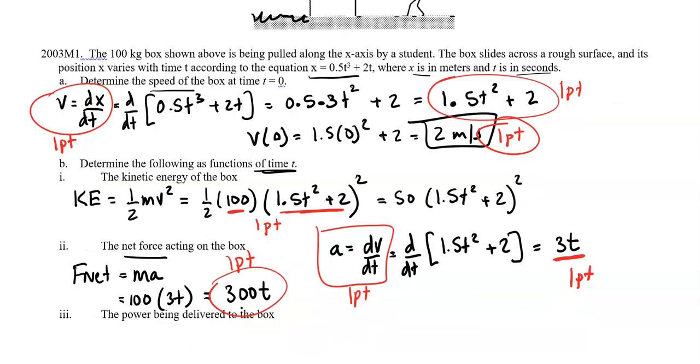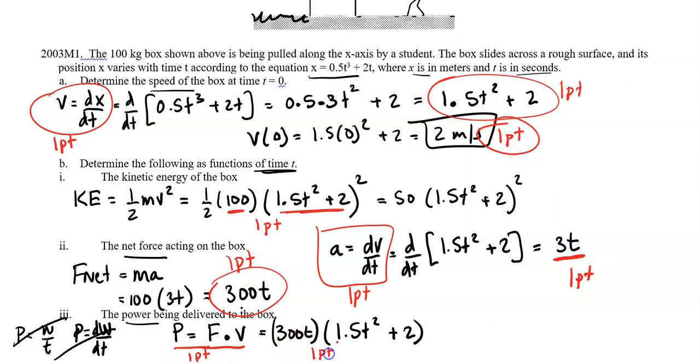Let's look at part B.iii. Now we need to find the power delivered to the box. I know power equals work over time, or you could say power is dW/dt. I don't necessarily know work in this case, and I'm going to have to use the derivative version essentially because things are changing. Let's use our other power equation: force times velocity. This is great when you're dealing with instantaneous things that are changing. Force is 300t, and velocity we found an expression for: 1.5t² + 2. We got our answer. For this, you get one point for writing down power equals force times velocity, and then one point total for substituting in the correct force and the correct velocity.